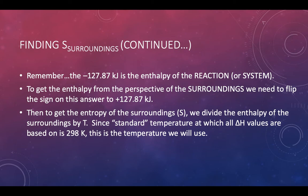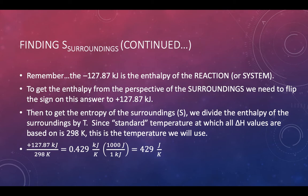We flip the sign on the enthalpy of the reaction because if the reaction gives off heat, the surroundings are absorbing that heat energy. Absorbing heat is shown as a positive H. To convert that to an entropy value, we divide by temperature. Since all those heats of formation are under standard conditions at 298 Kelvin, we divide positive 127.87 kJ by 298 K, giving us +0.429 kJ/K for the entropy of the surroundings.